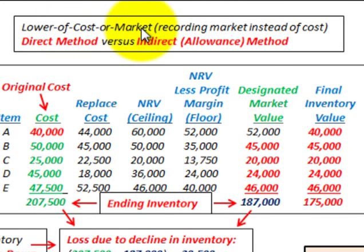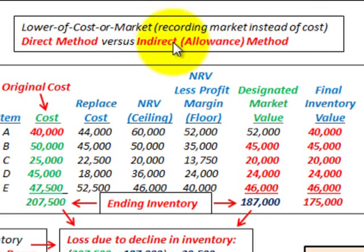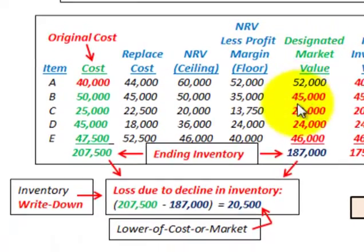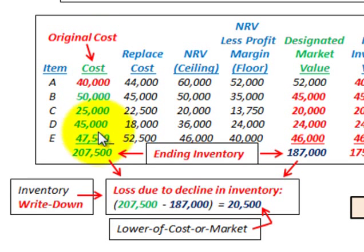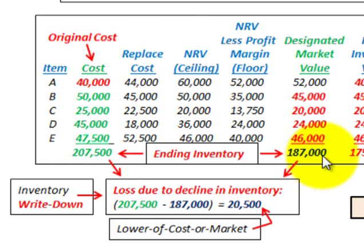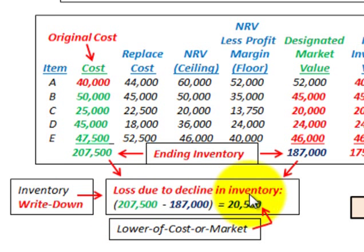We're going to be using the lower of cost or market method for valuing our inventory, recording at market value instead of cost. We're comparing the direct method versus the indirect or allowance method. We'll determine the market value of items in our inventory and compare that to the original cost. Our ending inventory at cost is $207,500, and the market value is $187,000. So we've had a decline in our inventory, and we need to record an inventory write-down — a loss due to that decline.